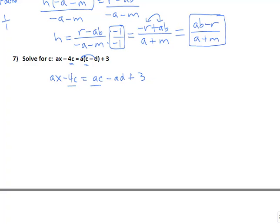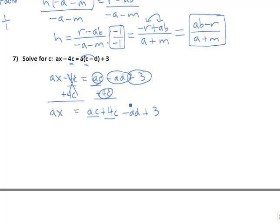Now I have several c terms. I have this c and this c, and I want to get them together on the same side. And I want to try to get as many positives as I can. So my choice here would be to add 4c to the right side, so that it's a positive term. So on the left side, all I'll have is that ax. On the right side, I'll have the original ac from up here. I'm going to squeeze in that plus 4c that we just added in, and then I still have my minus ad, and I still have my plus 3. Now these two terms are the c terms. The other two over here don't have c's, so I want to move those over to the left side by doing their opposites. So I am going to add ad to the left side, and at the same time I'm going to subtract 3. So the left side becomes ax plus ad minus 3 equals ac plus 4c. So now we have our c's on the right and everything else on the left.